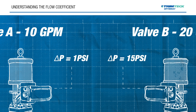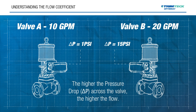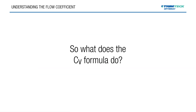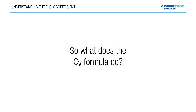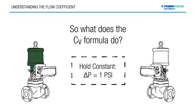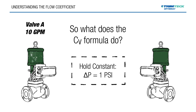The first concept to understand is that the higher the pressure drop across the valve, the higher the flow. That would at least in part explain why Valve B is flowing 20 gallons per minute versus Valve A flowing 10 gallons per minute. So what does the CV formula do? It holds the pressure drop at a constant of 1 psi so that we can better compare the two valves. Holding this pressure drop constant at 1 psi, Valve A still flows at 10 gallons per minute, but Valve B drops to 2 gallons per minute. So there must be some other variable at play.